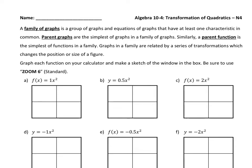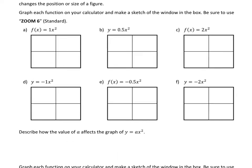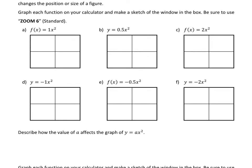Graph each function on your calculator and make a sketch of the window in the box. Be sure to use Zoom 6, which is Zoom standard. So what you're going to do here is go to your calculator and go to your y equals. Make sure you clear out everything you see in your y equals. Go ahead and type in 1x squared. Make sure you hit Zoom 6 for standard. So what we're going to do is just make a sketch. 1x squared looks something along those lines, and this is our parent function.